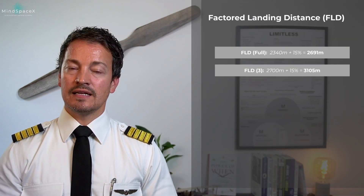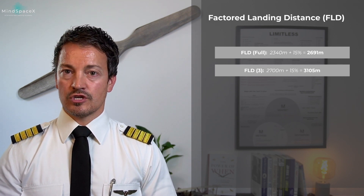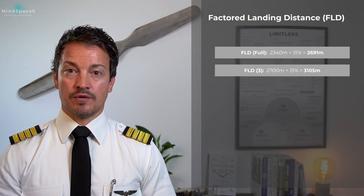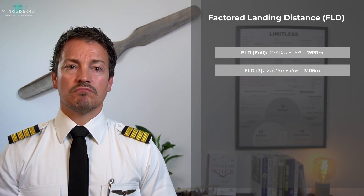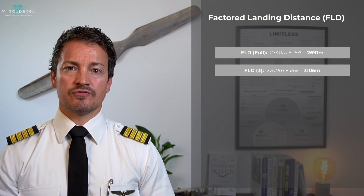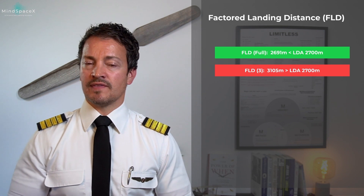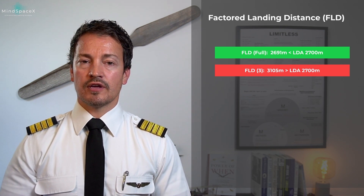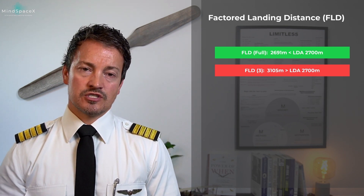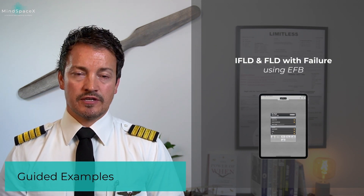We still need to compare both with their factored values — adding 15% to each. The factored landing distance allows us to land config full only, since we have 2700 meters of landing distance available. Config 3's factored distance exceeds that. That completes the QRH calculation for a single failure.